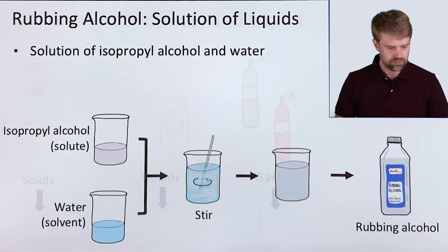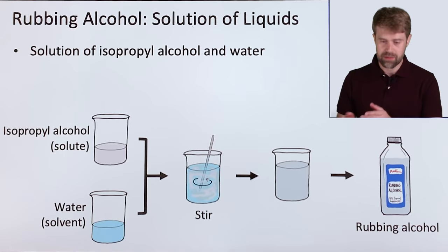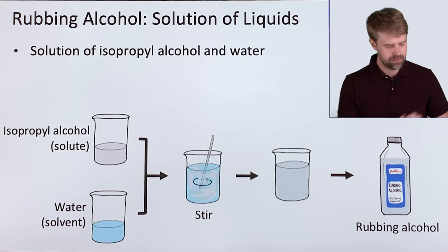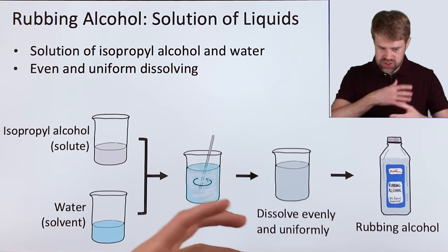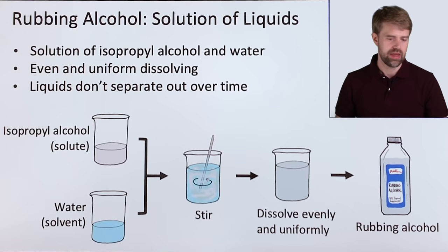Here's an example where we make a solution by mixing two liquids. The rubbing alcohol in your medicine cabinet is a solution of isopropyl alcohol mixed with water. These are two different liquids. You can stir them together, and they spread out through each other, dissolving evenly and uniformly. And, the liquids don't separate out over time. So, this rubbing alcohol that we end up with, this is a solution.